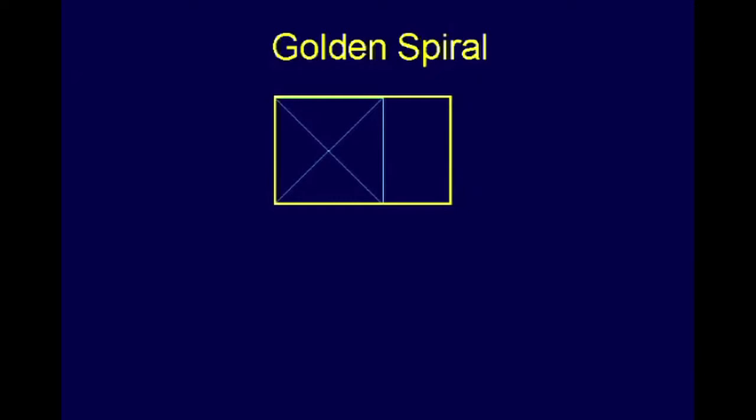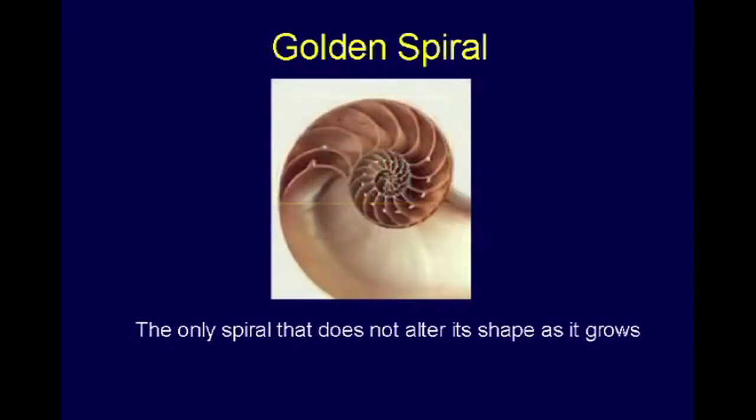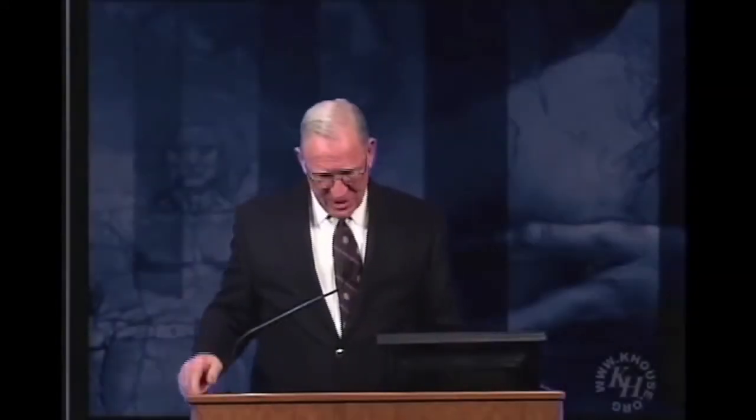Let's just take one more. If we take the golden rectangle, take a square out of it, take another square out of it, take another square out of it, we have, with the golden rectangle, we can create a spiral, right? Very famous spiral, it turns out. It's the only spiral that does not alter its shape as it grows. It has that peculiar mathematical property, and you've all seen one. It was called the chambered nautilus shell. It shows up a lot of other places, too, but I mentioned this as just a very crisp example.